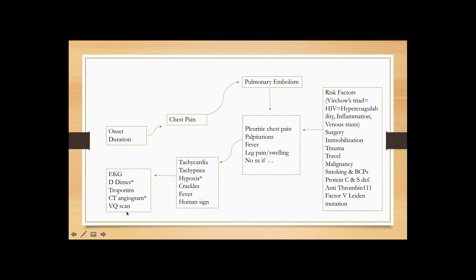For treatment, whenever a patient has PE, they need to be first placed on heparin — usually IV heparin — and then on warfarin or Coumadin for anticoagulation. Depending on whether the PE was provoked or unprovoked, they either need lifelong Coumadin or a set duration of therapy. Once somebody has developed PE it's usually lifelong treatment; if it's only DVT, it doesn't have to be lifelong.